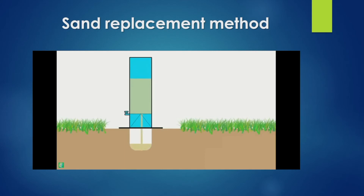We invert and place the jar over the hole. The sand fills the hole completely. If we weigh the jar before and after, we can find the weight of sand that fell into the hole.